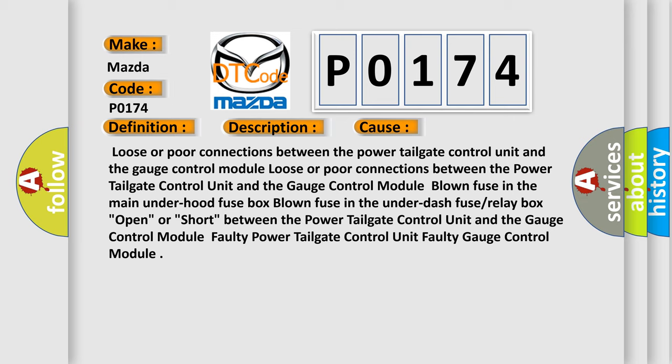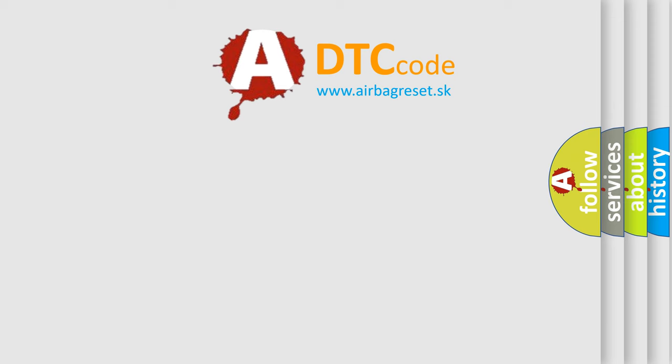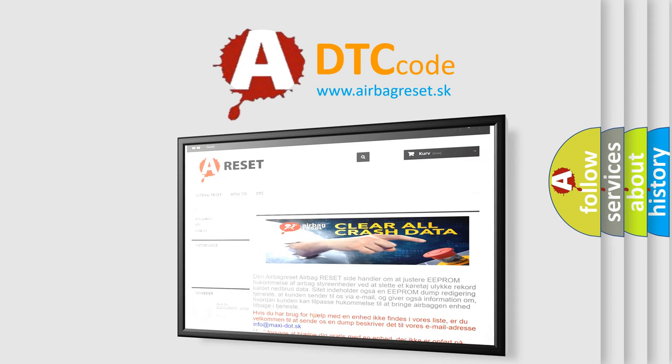Loose or poor connections between the power tailgate control unit and the gauge control module and the gauge control module fuse or relay box. Open or short circuit between the power tailgate control unit and the gauge control module. Faulty power tailgate control unit. Faulty gauge control module. The airbagreset website aims to provide information in 52 languages. Thank you for your attention and stay tuned for the next video.